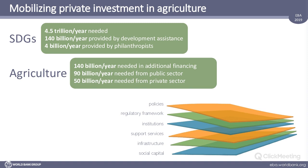When it comes to how the private sector can be mobilized, that's where the concept of the enabling environment comes into the picture — basically the set of conditions that facilitates, motivates, and stimulates private sector investment and performance. This enabling environment is composed of different dimensions: policies, regulations, institutions, support services, infrastructure, social capital, and many more. Together, these are the components we need to be thinking about, analyzing, and improving to provide the necessary conditions for private investment.